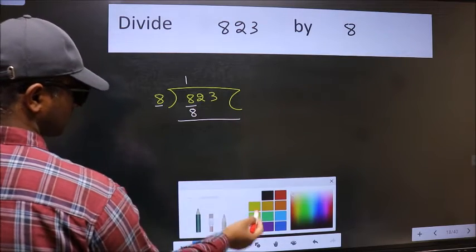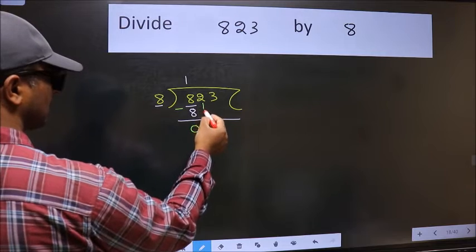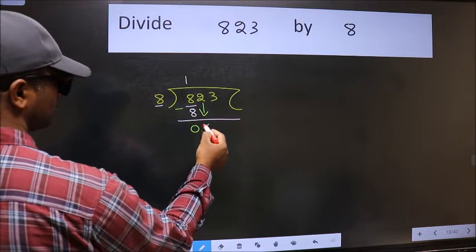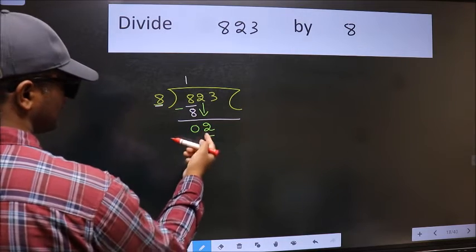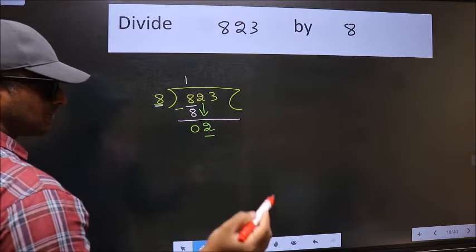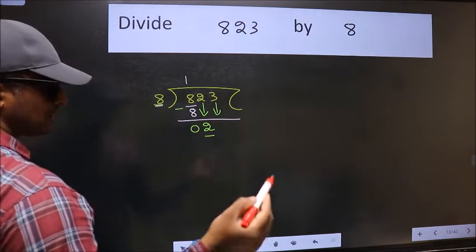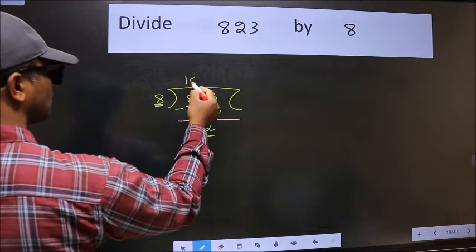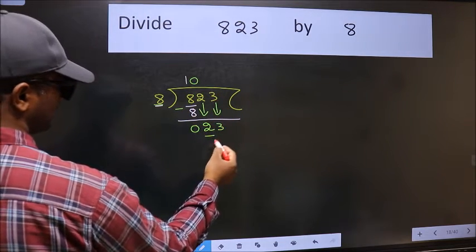Now we should subtract. We get 0. After this, bring down the next number, 2. Now here we have 2, and here 8. 2 is smaller than 8, so we should bring down the second number. The rule to bring down the second number is we should put 0 here, then only we can bring this number down.